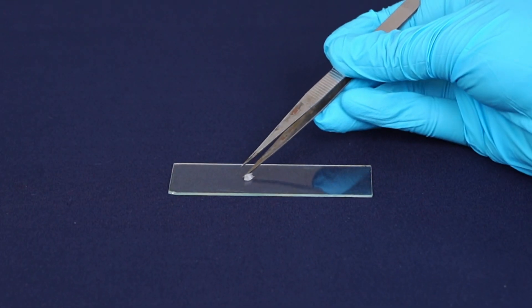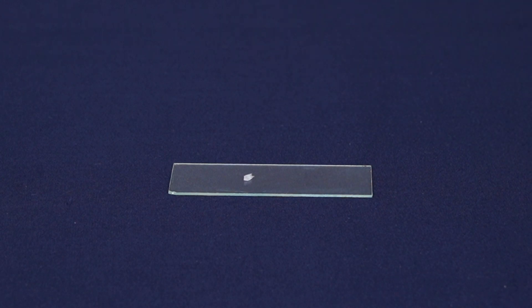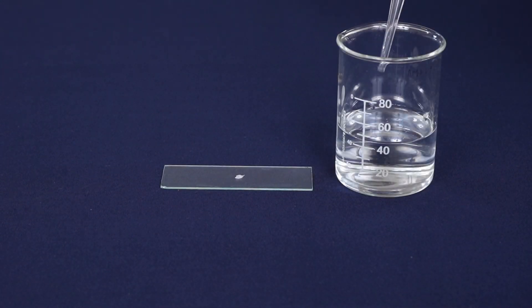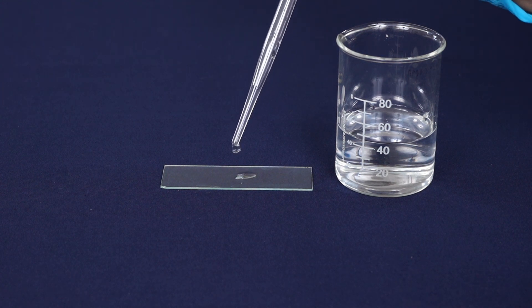Put the onion peel onto a glass slide using forceps. Add a few drops of water over it using dropper to avoid desiccation.